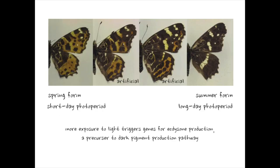This one is very tricky. There is a butterfly species that, when developing in the chrysalis, develops a different-looking wing pattern depending on the length of the photoperiod it's exposed to. If the chrysalis is exposed to more light, it triggers genes for producing a hormone — a precursor in a pathway that develops dark pigment. In this example, what is the sign vehicle? What is the response? And the tricky part: what is the objective?